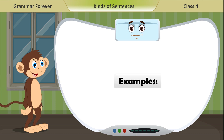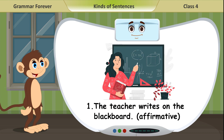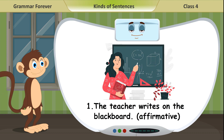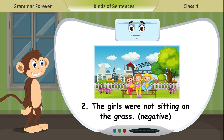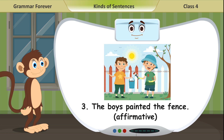Examples: 1. The teacher writes on the blackboard — affirmative. 2. The girls were not sitting on the grass — negative. 3. The boys painted the fence — affirmative.